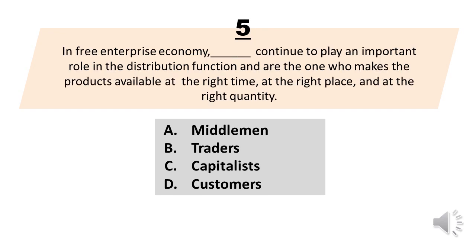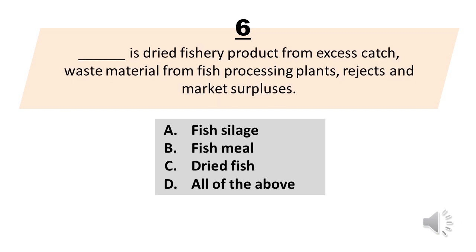In free enterprise economy, blank continues to play an important role in the distribution function and are the one who makes the products available at the right time, at the right place, and at the right quantity. A. Middlemen. B. Traders. C. Capitalists. D. Customers. The answer is Letter A, Middlemen.